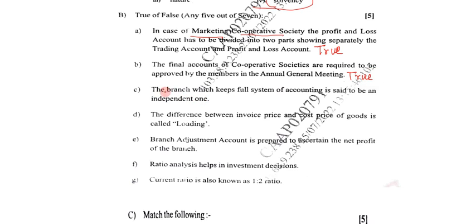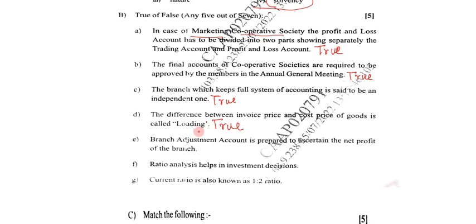Next: The branch which keeps the full system of accounting is said to be an independent one. True — the branch which keeps the full system of accounting is said to be an independent branch. Next: The difference between invoice price and cost price of goods is called loading. True — that is correct.